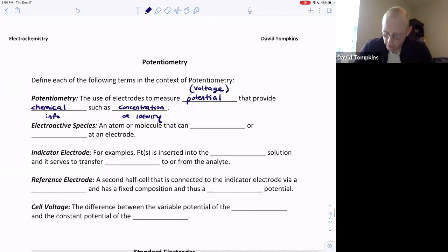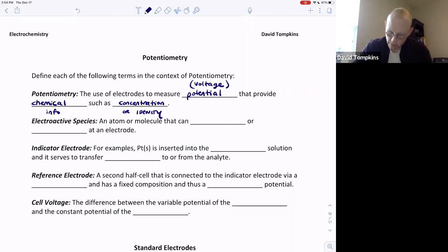Those unknown species that we'll be measuring are known as electroactive species, and these are atoms or molecules that can either be oxidized or be reduced during reaction at an electrode. They can transfer electrons to another species or accept electrons from that species.